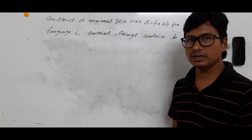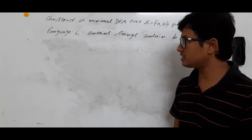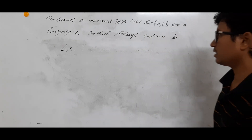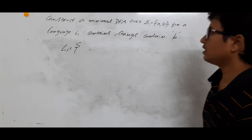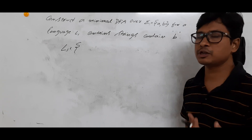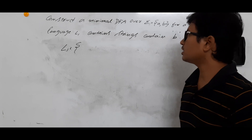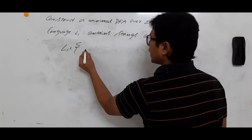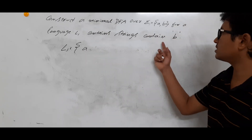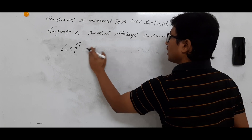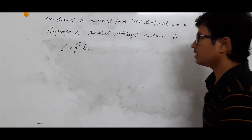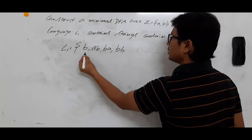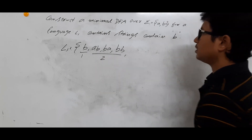Before constructing the minimal DFA, I want to find what strings belong to language L1 and what strings do not. Epsilon does not belong because epsilon does not contain b. With length one, only b is allowed. With length two, ab, ba, and bb are all allowed.